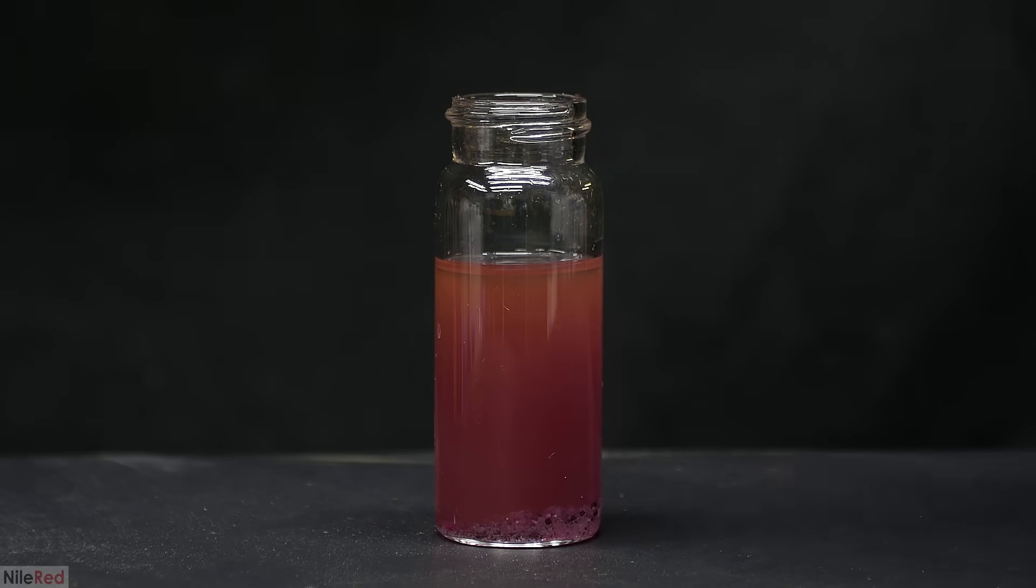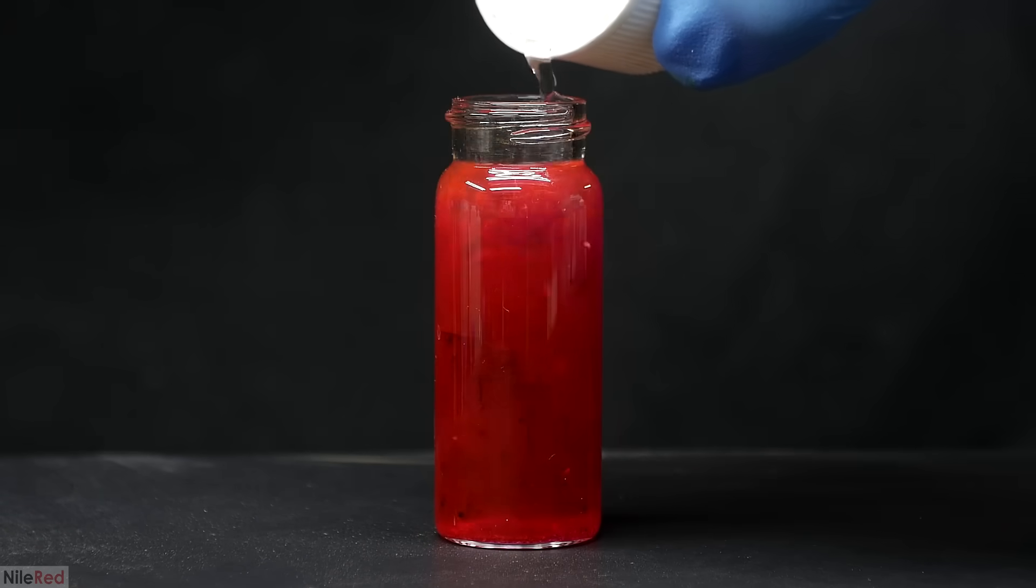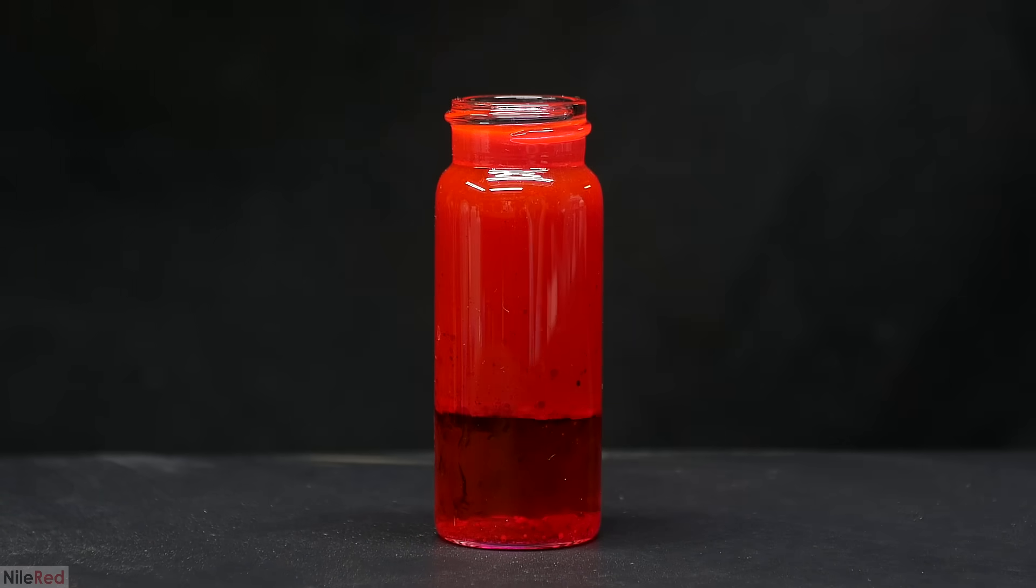On top of all of this, I pour in a few milliliters of 30% peroxide, which quickly sinks to the bottom. Before I shake it up, you can see the layer between the two is faintly glowing. In this case, because I used Rhodamine B as the fluorescent dye, the glow is red.